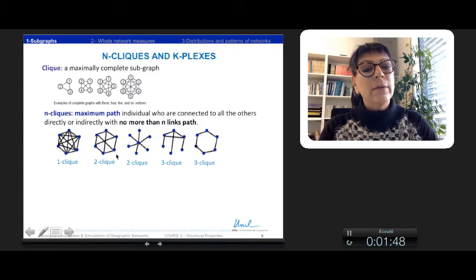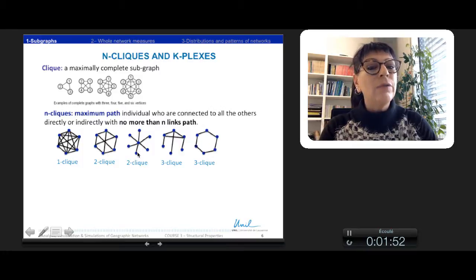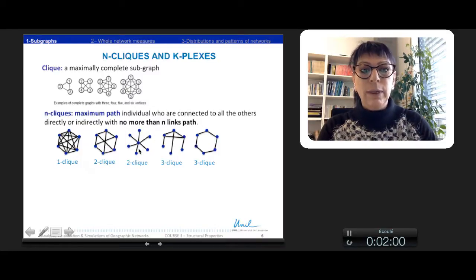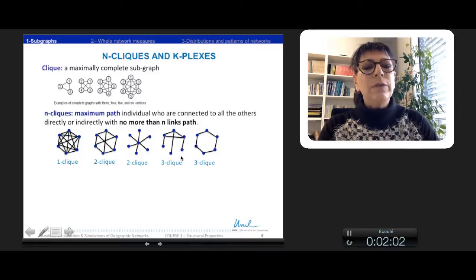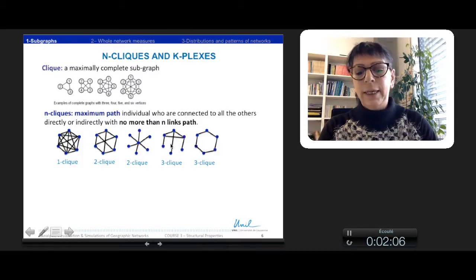A two-click can have another kind of aspect, like a star for here. A star can always be a kind of clique, a two-click. The same for three-click, there are different kinds of three-click and four-click and so on.